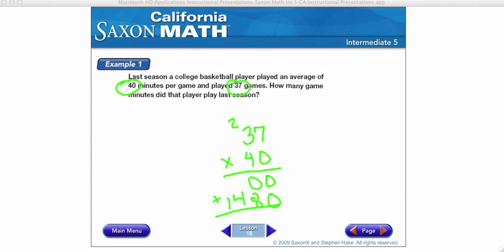Instead, what I can do is set up my problem a little bit differently. 37 times, and now I'm going to move my 40 over one place to the right, so that the 0 is hanging out here all by itself. Now you can only do this kind of problem if you have a number ending in 0. If this is anything else, this will not work.